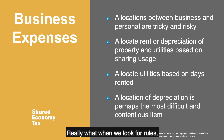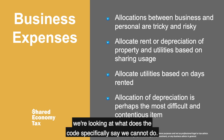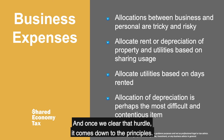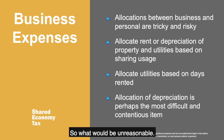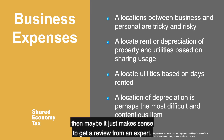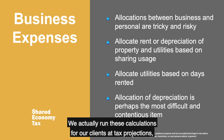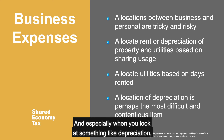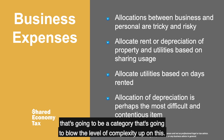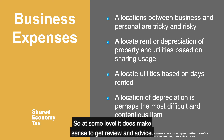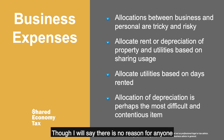There are specific rules — really, we look at what the tax code specifically says we cannot do, and once we clear that hurdle, it comes down to principle: what would be unreasonable? If you feel confident on those two factors, it may make sense to get a review from an expert. We run these calculations for our clients at tax projections. This is probably the trickiest part clients get stuck on, especially when you look at something like depreciation, which blows up the level of complexity. At some level, it makes sense to get review and advice, though there's no reason not to have a first go at calculating this yourself.